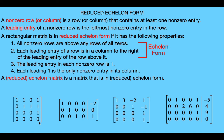Starting with the first matrix, it has one row of all zeros, but that row is below all non-zero rows so it satisfies the first property. The leading entry of the first row is a one, the leading entry for the second row is a one, and the leading entry for the third row is another one. Each leading entry is in a column to the right of the leading entry of the row above it, forming a staircase-like pattern, so the matrix satisfies the second property.